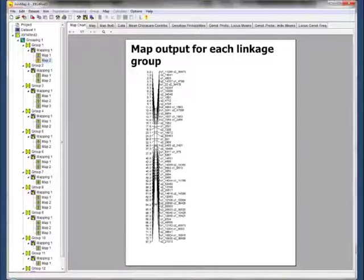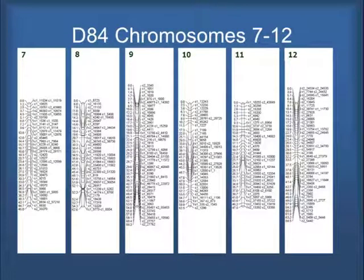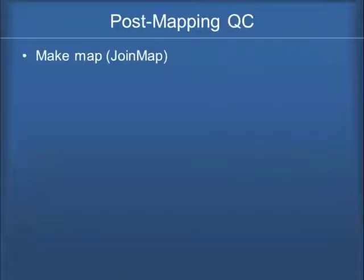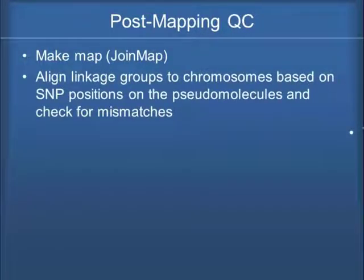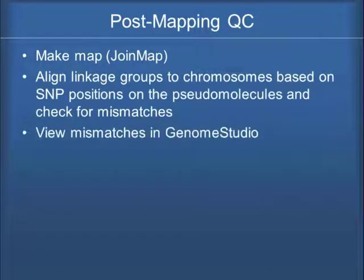Right now we don't know which chromosome this linkage group is associated with. What you can do is go back and look at the SNPs that you have, go back to the pseudomolecule, and then call that the actual chromosome. What we have here now is chromosomes one to six associated with the linkage groups, and here seven to 12. That's the process that we go through — we've made the map and we align them with the pseudomolecules.